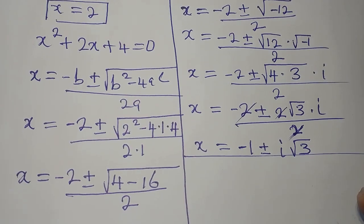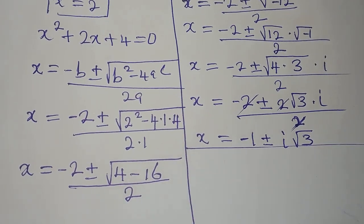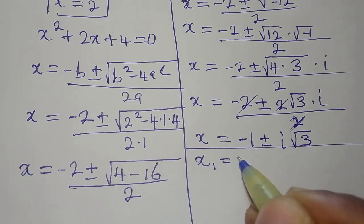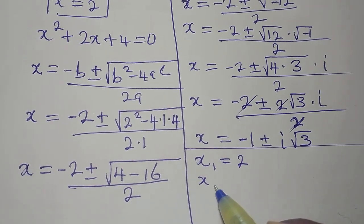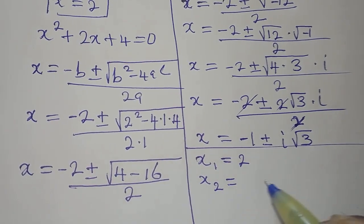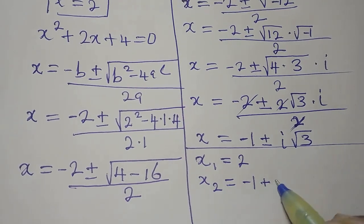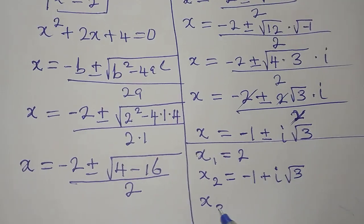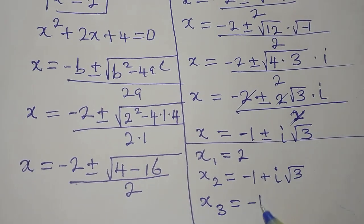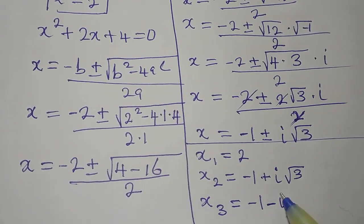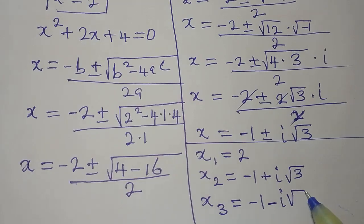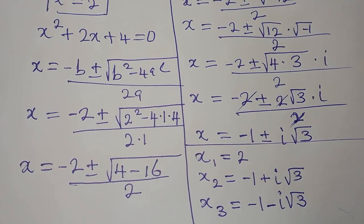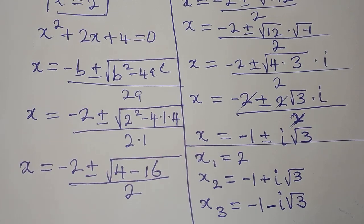Let's bring the three solutions together. x1 equals 2. x2 equals minus 1 plus i root 3. x3 equals minus 1 minus i root 3. These are the three solutions. Subscribe to my channel for more of this.